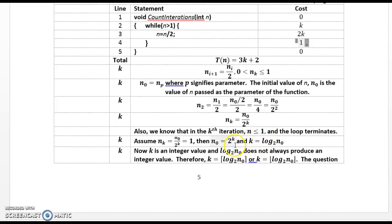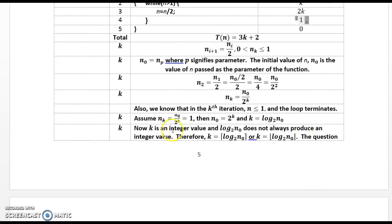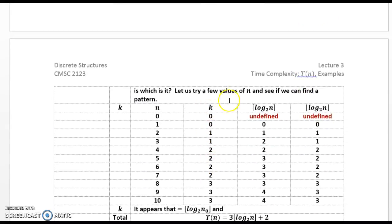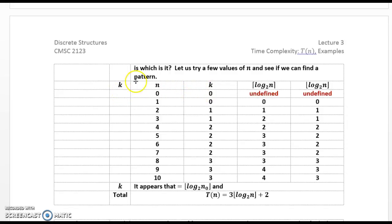Also, we know that in the kth iteration, n is less than or equal to 1 and the loop terminates. Assume n sub k is equal to 1, so that we can set our iteration n sub 0 over 2 to the k equal to 1. And then we can find n sub 0 is equal to 2 to the k, and k is equal to log to the base 2 of n sub 0. Now, k is an integer value and log to the base 2, n sub 0, does not always produce an integer value. Therefore, k is the ceiling of log 2 of n 0, or k is the floor. The question is, which is it? Let's try a few values of n and see if we can find a pattern.